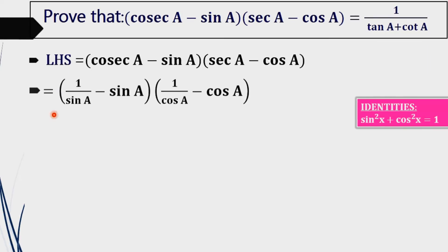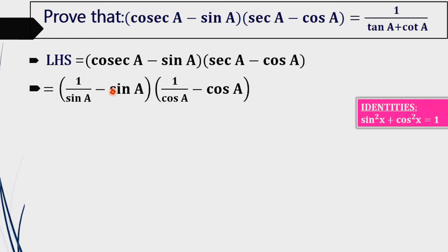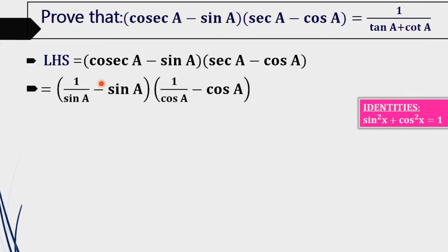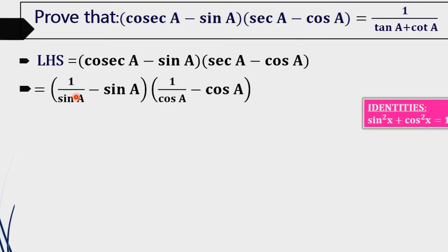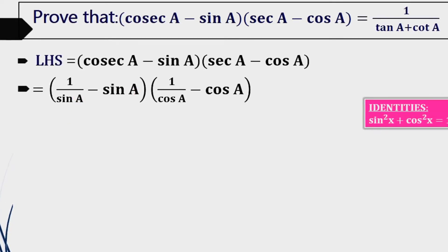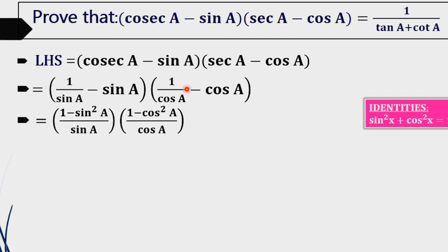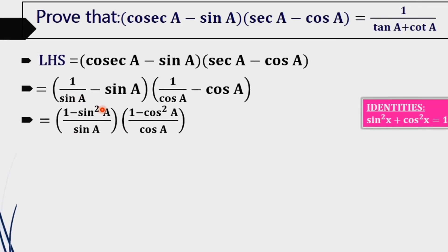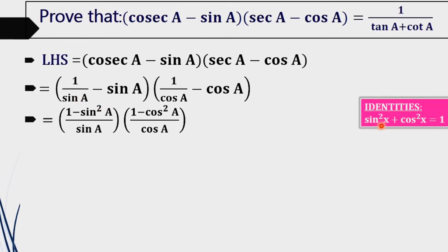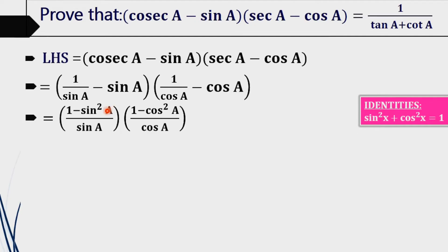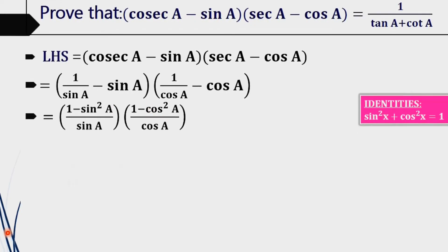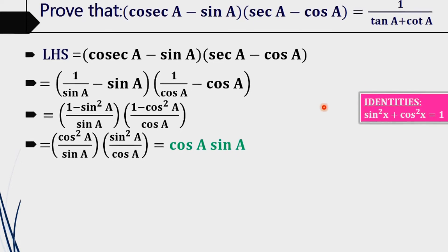Then, (1/sin(a) - sin(a)) × (1/cos(a) - cos(a)). On taking LCM, we get (1 - sin²(a))/sin(a) × (1 - cos²(a))/cos(a). Using the identity sin²(x) + cos²(x) = 1, we get 1 - sin²(a) = cos²(a) and 1 - cos²(a) = sin²(a).